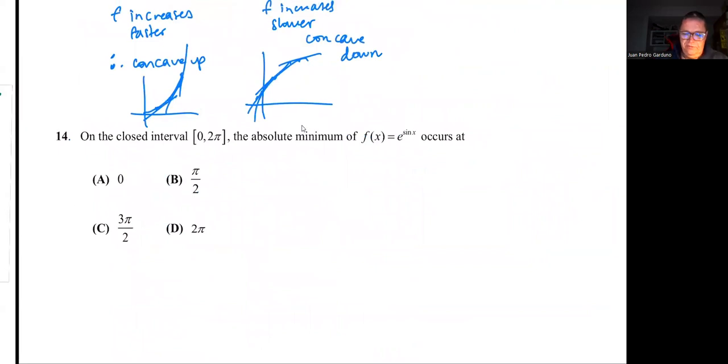We're getting to the last problem on this page, problem 14. Problem 14 says that on the closed interval between 0 and 2π, the absolute minimum of f(x) = e^(sin x) occurs at. So we want to find that absolute minimum. Very important here. When we talk about absolute minimum, we are talking about something called the candidates test.